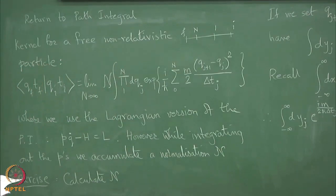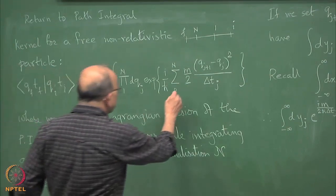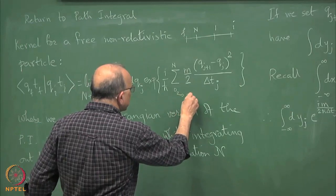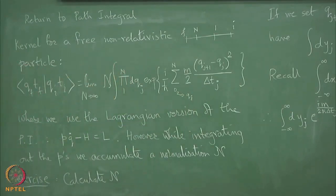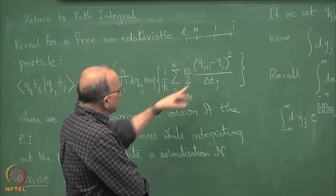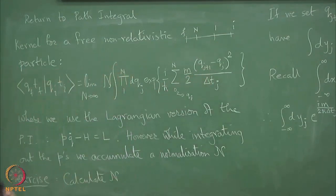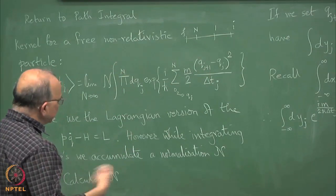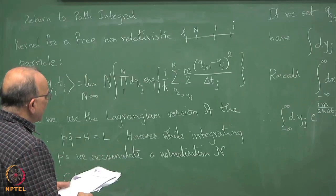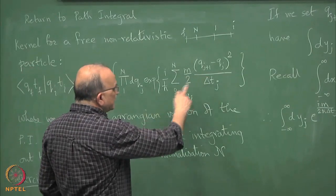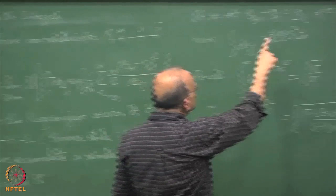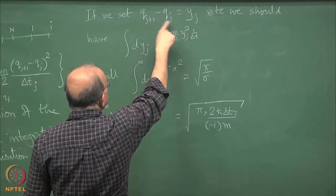So 0 becomes q_i and you go up to n, then you get q_{n+1}. So 0 is equal to q_i. That is actually not an integration variable, but in the summation you have to put it because otherwise you will not get the right thing. So what we do is introduce one more auxiliary y — so the first one will be: we define y_j equal to q_{j+1} minus q_j.